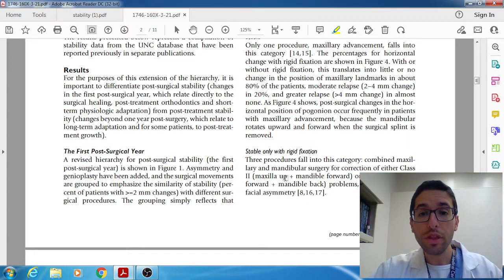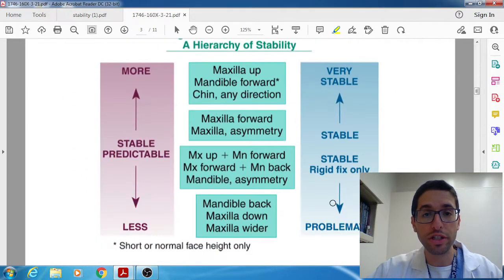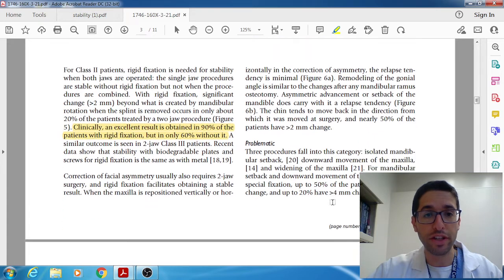Then the other categories of stable and stable only with rigid fixation those were both class 2 and both class 3 so maxilla up mandible forward like how you would treat a class 2 that was in this category and again class 3 so maxilla forward mandible back both of them and some asymmetry both of the asymmetry all those were considered stable provided with rigid fixation. They said in those categories they had about 90 percent of those patients had excellent results when they use rigid fixation but if they did not use rigid fixation then the results only 60 percent had good results and 40 percent had relapse so for this category the rigid fixation was key.